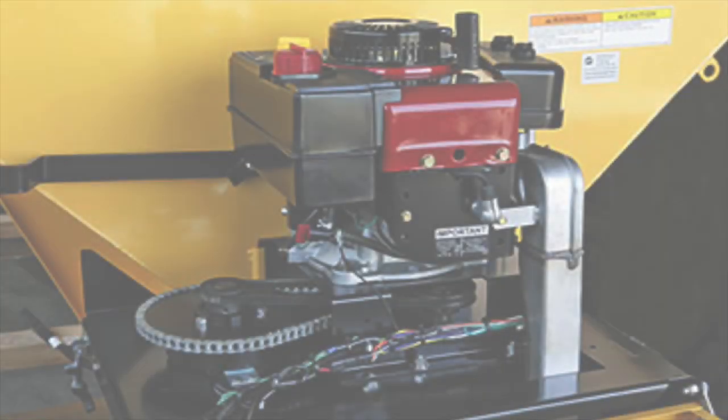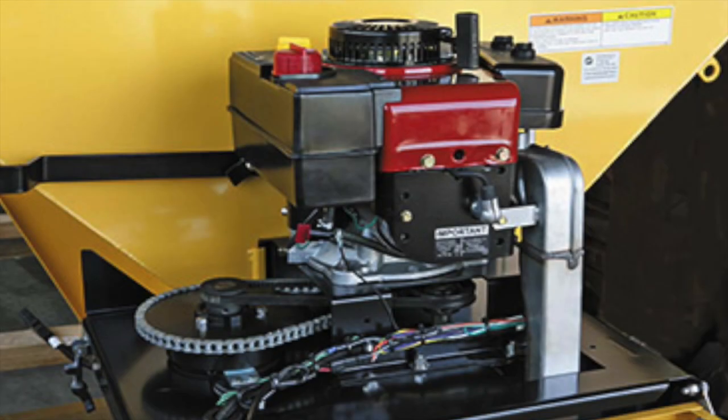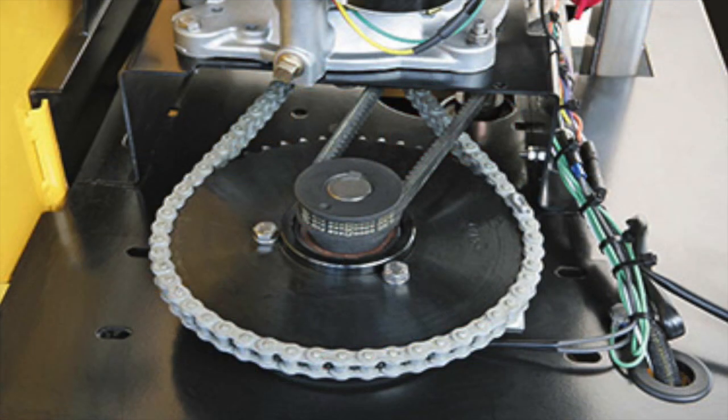General purpose clutches from Ogura are used in a variety of rotating implement applications that are usually driven by gas or diesel engines.